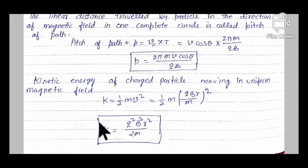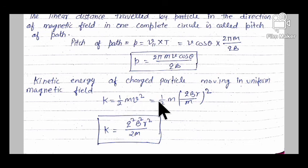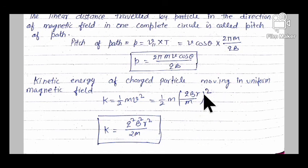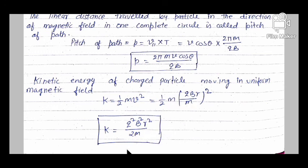Kinetic energy of a charged particle moving in a uniform magnetic field: K = ½mv². Substituting V = qBr/m, we get K = ½m·(qBr/m)² = q²B²r²/(2m).